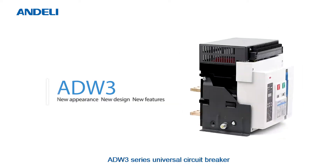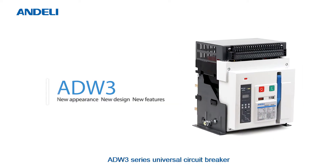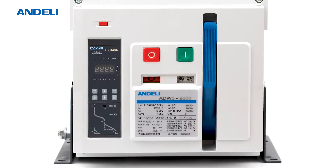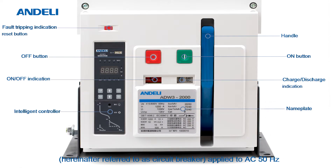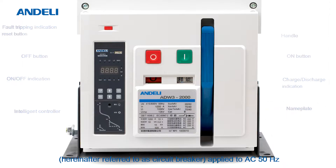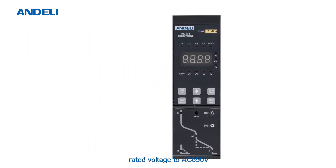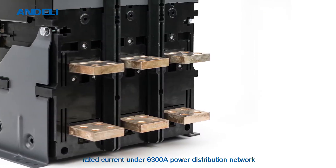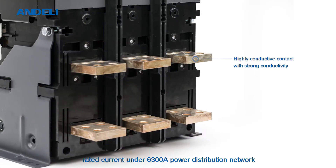ADW 3 Series Universal Circuit Breaker, applied to AC 50 Hertz, rated voltage AC 690 volts, rated current under 6300 amps power distribution network.